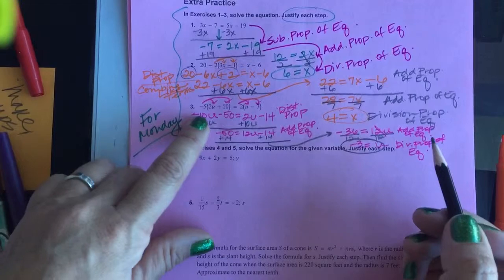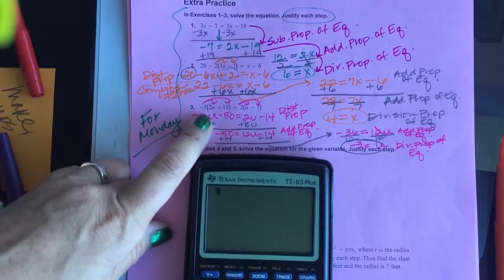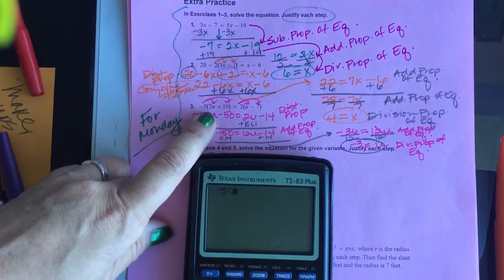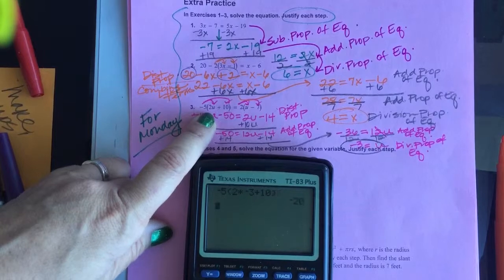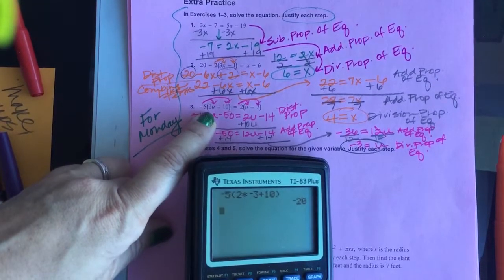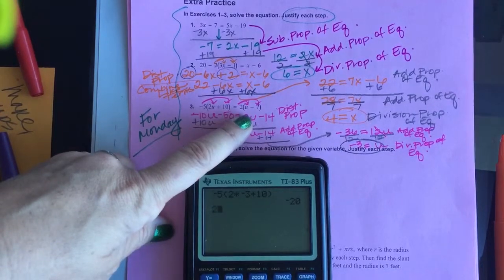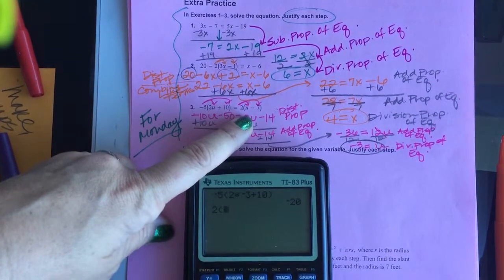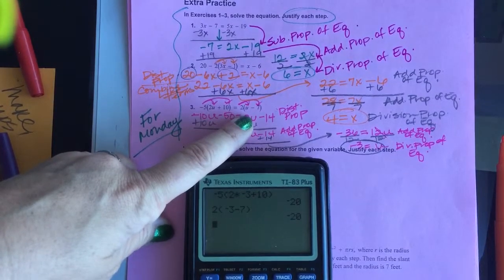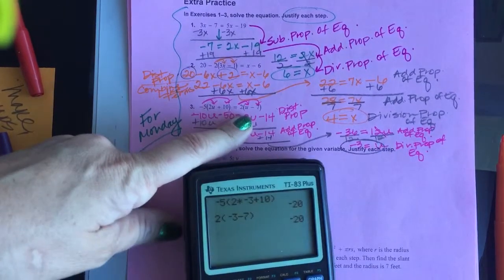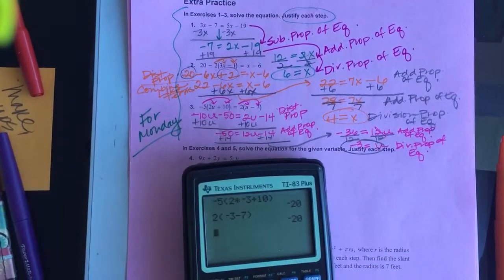Now, substitution is going to take me back in here. One second, please. Negative 5 outside. 2 times negative 3 plus 10. When I did the left-hand side, I got negative 20. Now let me go over to the right-hand side. 2 times the quantity negative 3 minus 7. Yep, negative 20 on the right-hand side. So using substitution at the end helped me to check to see if my final answer here was right.